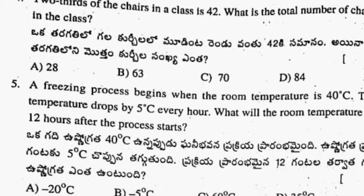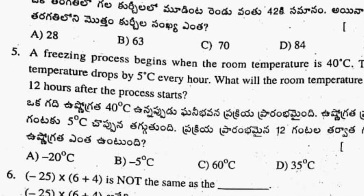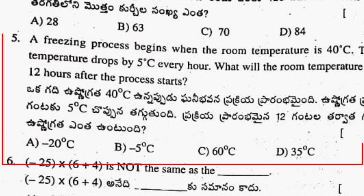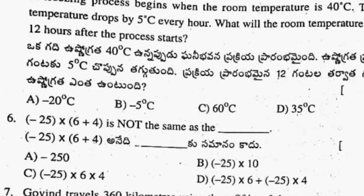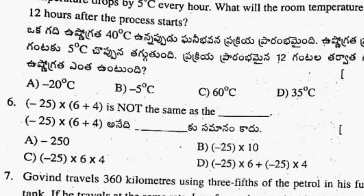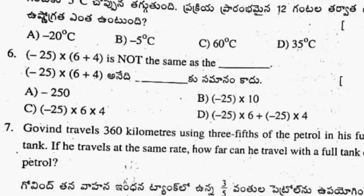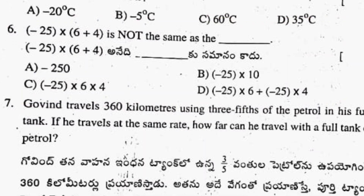Next is the fifth question. Fifth question answer: option A is the correct answer. Next is the sixth question: minus 25 into 6 plus 4 is not the same as option C, which is minus 25 into 6 into 4.